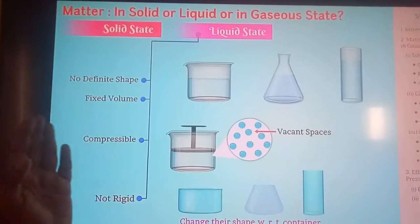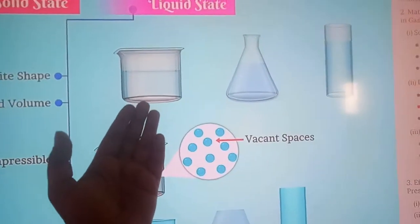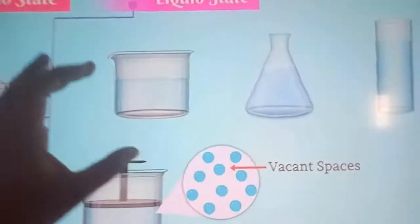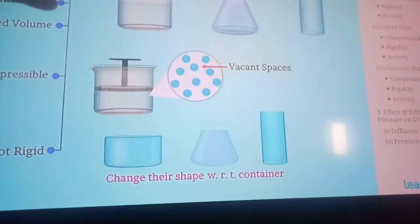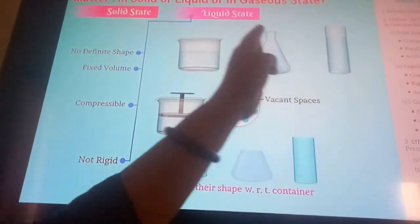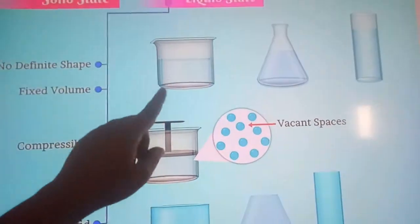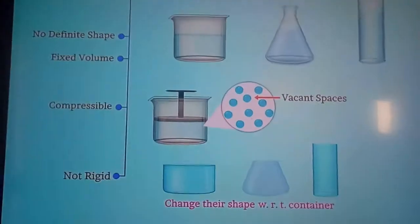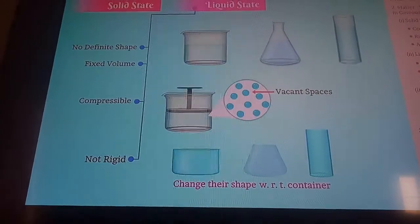Next is the liquid state. Looking at examples of liquids, take water poured into three different vessels — a bowl, a conical vessel, and a cylinder. In all three, water takes the shape of the container, showing that liquids don't have any definite shape. But does water have a fixed volume? Yes — when a milkman brings milk, you ask for one liter or half a liter, specifying a definite volume.